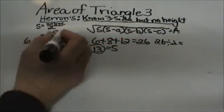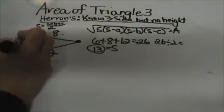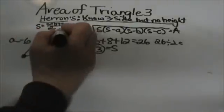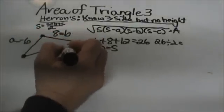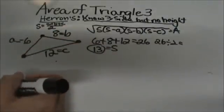Now a, b, and c are the three sides of the triangle. I will assign a as 6, b as 8, and c as 12. It does not really matter. They are interchangeable.